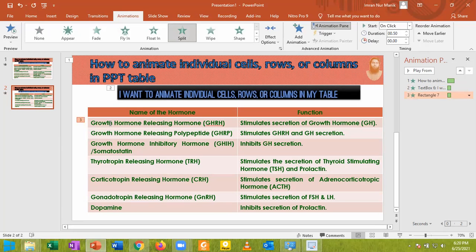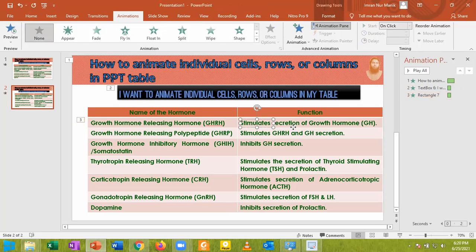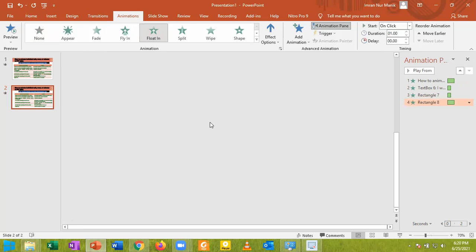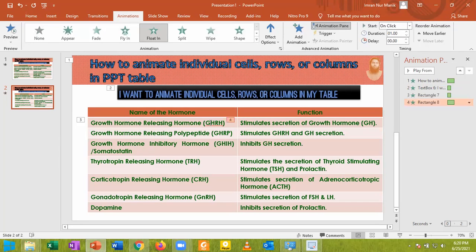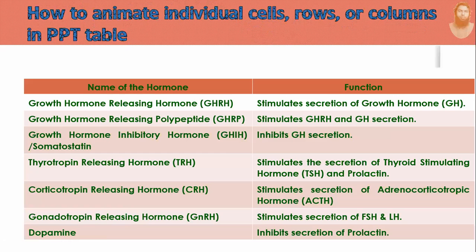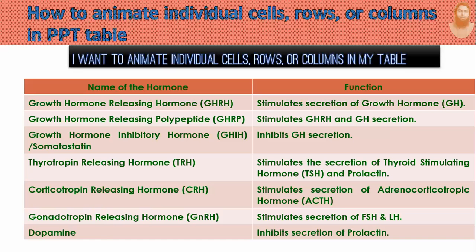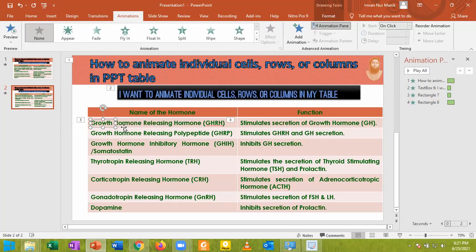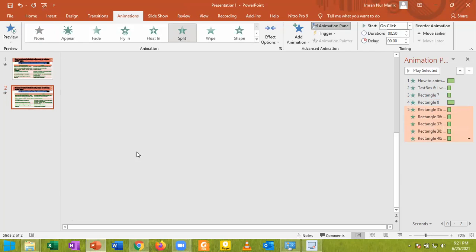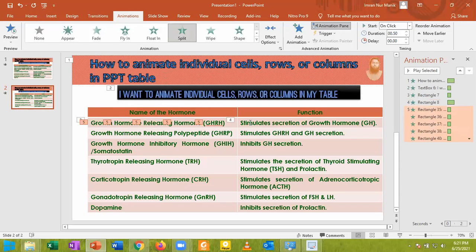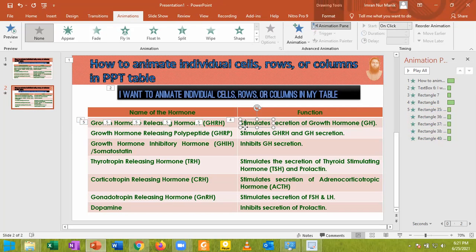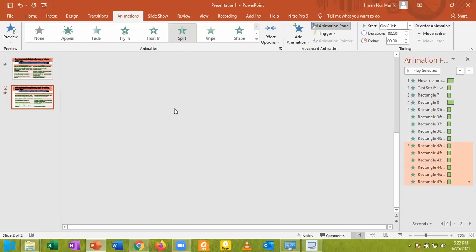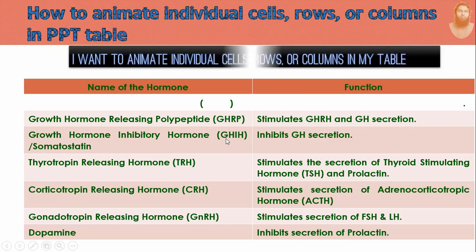Now we can see that the Split animation has been applied to this row. I am going to choose another row and apply the Float animation. Let's check this. So the animation has been taken by the background, not by the word. So you have to choose the individual word for applying the animation. Now let's check — the animation has been taken correctly.